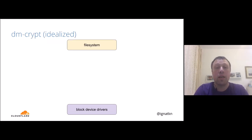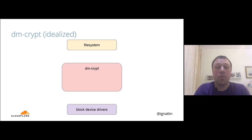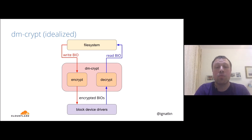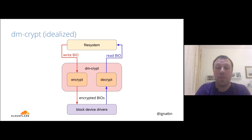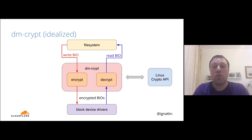Zooming into dm-crypt: when a filesystem wants to write a block, dm-crypt intercepts the request, encrypts it, and sends it down the stack. When a filesystem wants to read data, dm-crypt intercepts the ciphertext read from the block device driver, decrypts it, and sends the plaintext back to the filesystem. Importantly, dm-crypt doesn't implement its own cryptography — it uses the well-known standardized Linux kernel crypto API, which is open source and has been sufficiently reviewed.